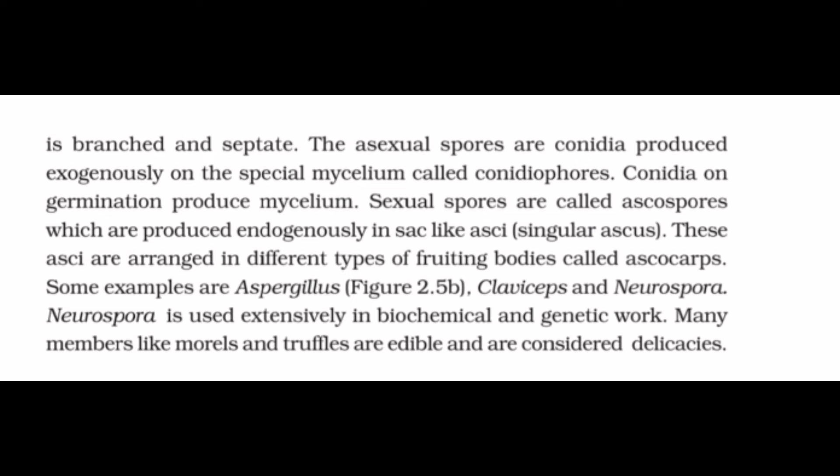The asexual spores are conidia, produced exogenously on special mycelium called conidiophores. Conidia on germination produce mycelium. Sexual spores are called ascospores, produced endogenously in sac-like asci (singular: ascus). These asci are arranged in different types of fruiting bodies called ascocarps. Some examples are Aspergillus, Claviceps, and Neurospora. Neurospora is used extensively in biochemical and genetic work. Many members like morels and truffles are edible and considered delicious.